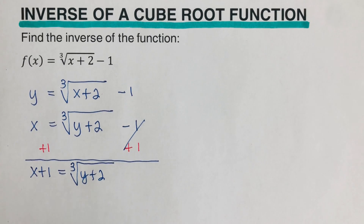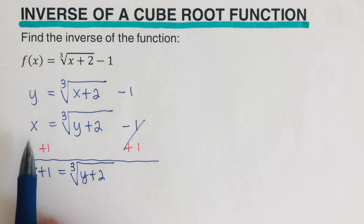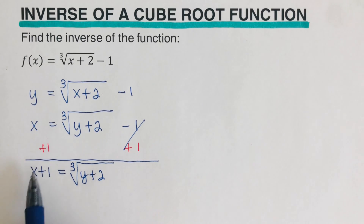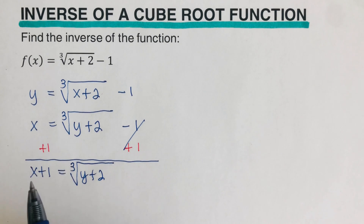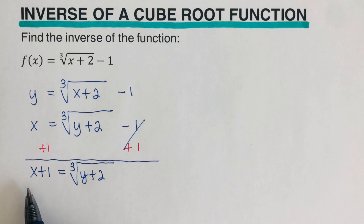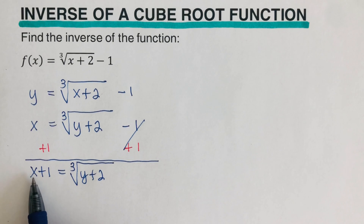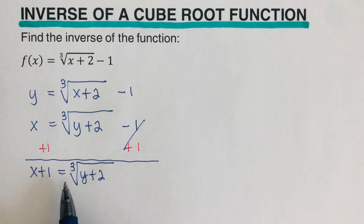Notice this: some might say that should be 1x, or that x plus 1 is 2x because 1x plus 1 is 2x. Please remember that these two are unlike terms — that means we cannot add them together. We write them as separate terms: x plus 1.